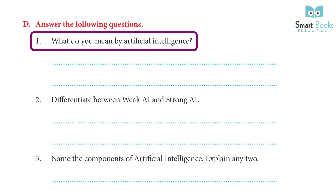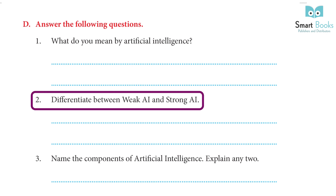2. Differentiate between Weak AI and Strong AI: Weak AI, also known as Narrow AI, is artificial intelligence with limited functionality. It is good at specific tasks. Strong AI is widely used and the scope is vast. It has incredible human-level intelligence.